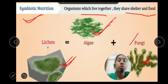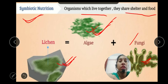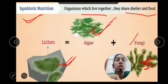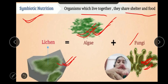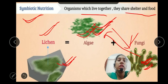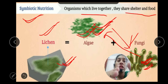Green algae have chlorophyll, so they are able to absorb sunlight and take carbon dioxide from the environment to make food. Fungi takes water and minerals from the soil and provides shelter to the algae. So algae gives food to the fungi and fungi gives shelter to the algae — this mutual understanding is called symbiotic nutrition. They are mutually beneficial to each other.